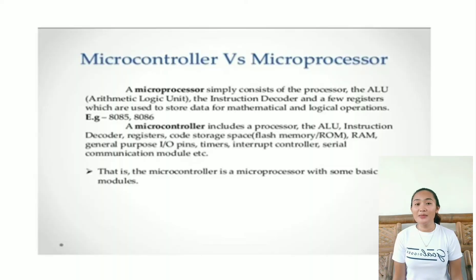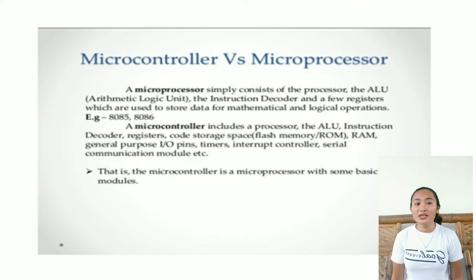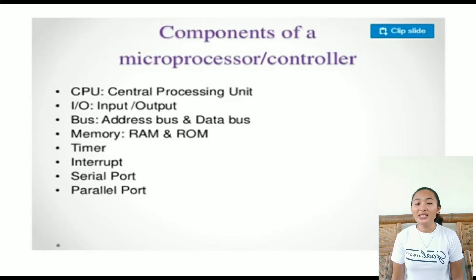A microprocessor simply consists of the processor, the ALU or arithmetic logic unit, the instruction decoder, and a few registers which are used to store data for mathematical and logical operations. So, the microprocessor is used in an application where the task is not predefined and it is assigned by the user.